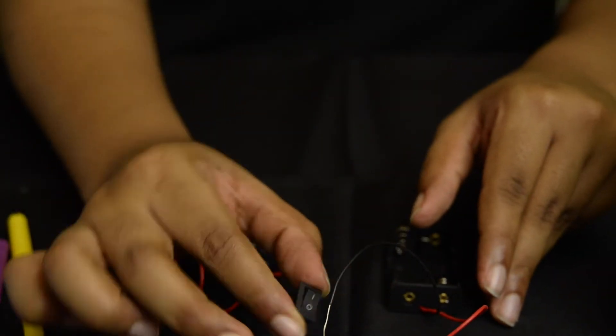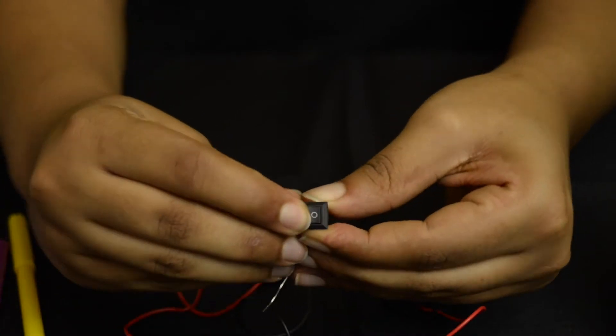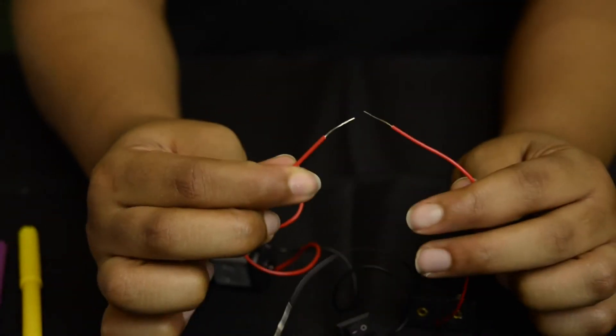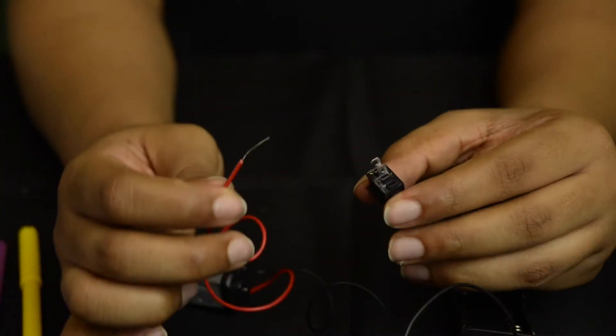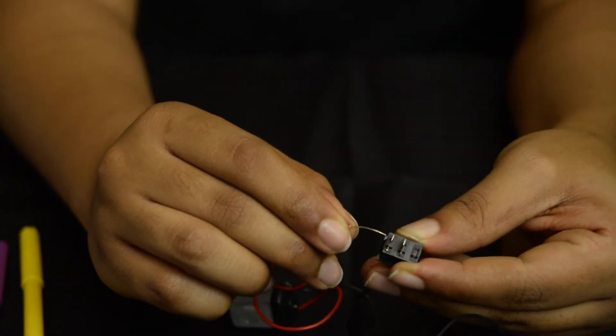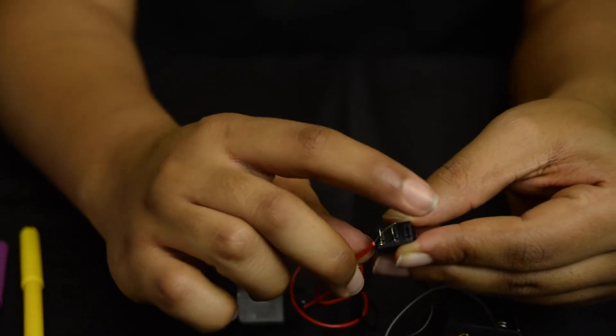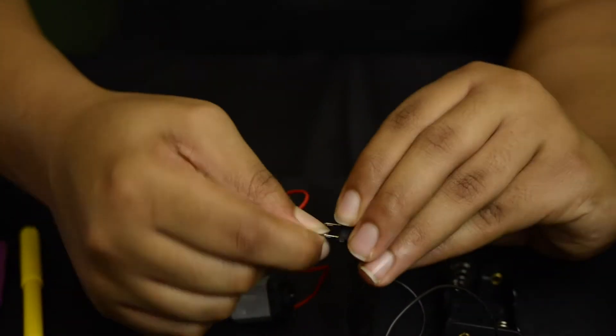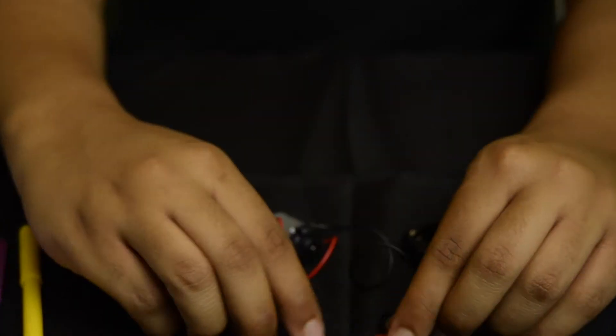Now pick up your switch which has two prongs with openings and take the red lead wire from the motor and place the metal tip into one of the holes of the prong. Bend and twist the wire around the prong to secure. Repeat using the red lead wire of the battery pack in the other hole of the prong.